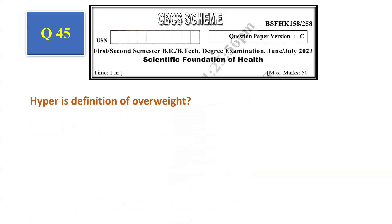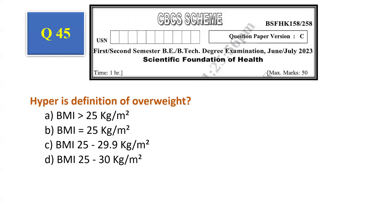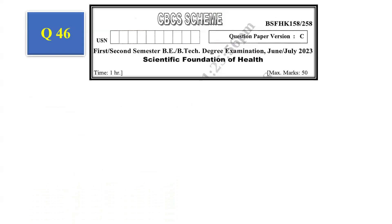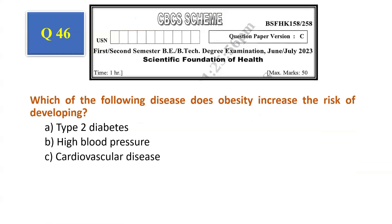Question number 45: Definition of overweight — BMI greater than 25 kg/m², BMI equals 20-25 kg/m², BMI 25 to 29.9 kg/m², BMI 25 to 30 kg/m². The answer is BMI between 25 to 29.9 kg/m², that is option C. Question number 46: Which diseases does obesity increase the risk of developing? Type 2 diabetes, high blood pressure, cardiovascular disease, all of the above. The answer is all of the above, that is option D.